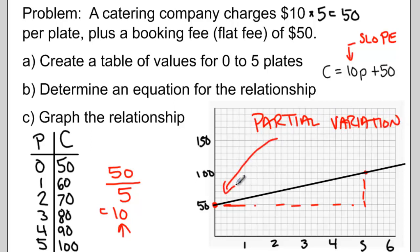Notice how our graph starts at a point that isn't the origin. When our graph starts above or below the origin, we're dealing with partial variation.